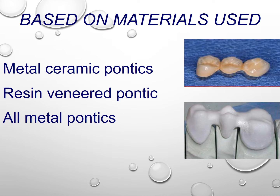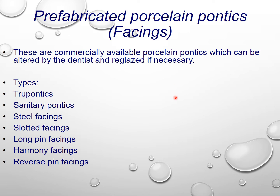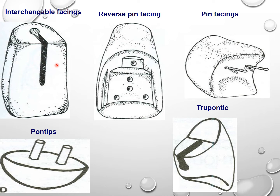Based on material use, there is a metal-ceramic pontic, a resin veneer pontic, or an all-metal pontic. Coming to prefabricated porcelain pontics — these are commercially available porcelain pontics which can be altered by the dentist and re-glazed if necessary. Types include true pontic, sanitary pontic, steel facing, slotted facing, long pin, harmony, reverse pin, and interchangeable. These are basically facings.